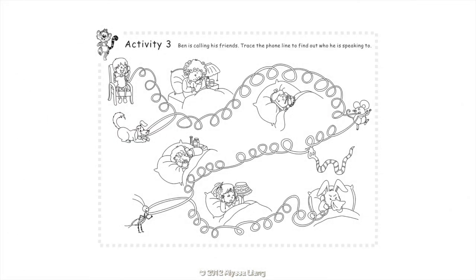Activity 3: Ben is calling his friends. Trace the phone line to find out who he is speaking to. Ben is speaking to Wabbit.